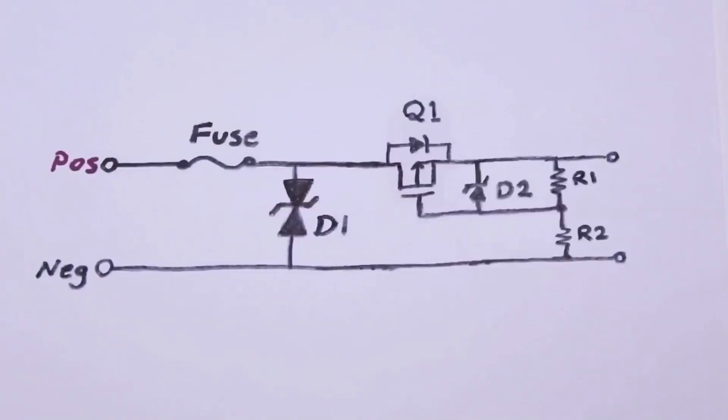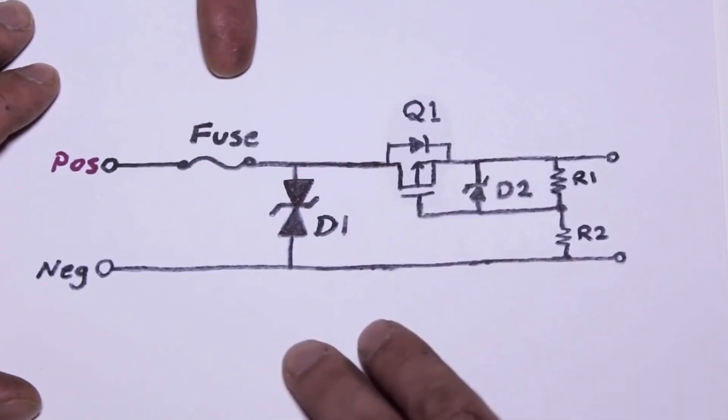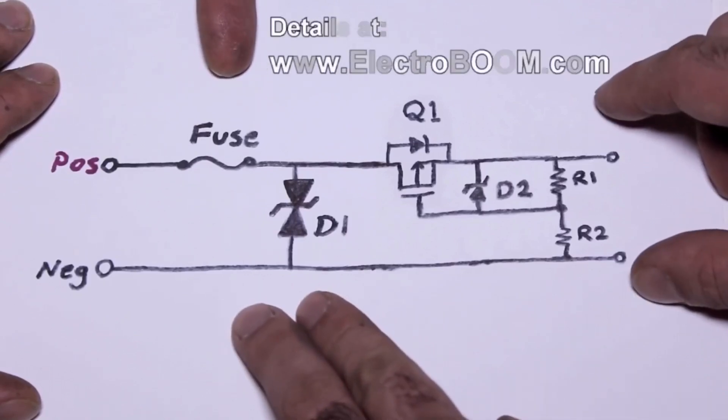Plug it in. Dear inverter designers, this is the circuit you need. Keep your fuse, change your diode to a TVS diode and use a MOSFET in this configuration for reverse polarity protection.